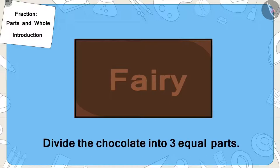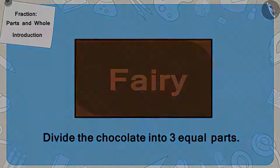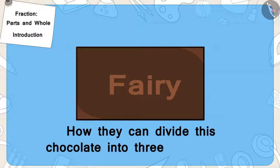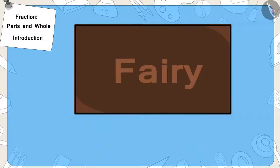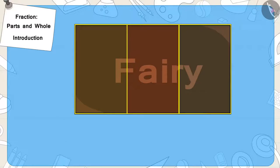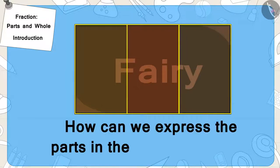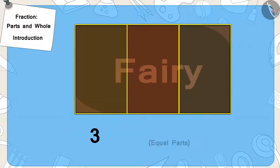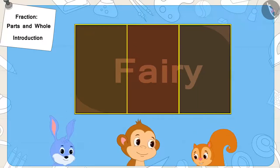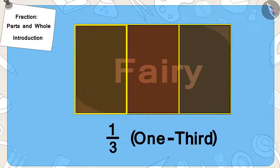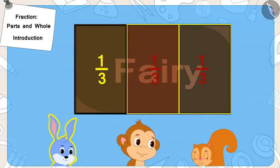So, now they have to divide the chocolate into three equal parts. Children, can you tell how they can divide this chocolate into three equal parts? If you wish to, you may stop the video and find the answer. Well done, children. You have divided this correctly. Now, can you tell how we can express the parts got by each one of the three as a fraction? There are a total of three equal parts of the chocolate and each one will get one part of it. We can write it as a fraction in this way. We also call this one-third of the whole chocolate. In this way, all three will get one-third of the chocolate.